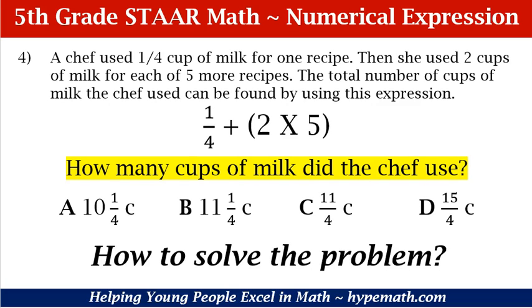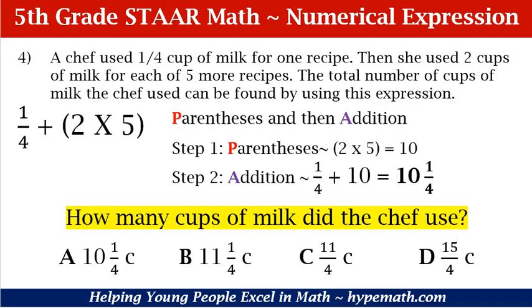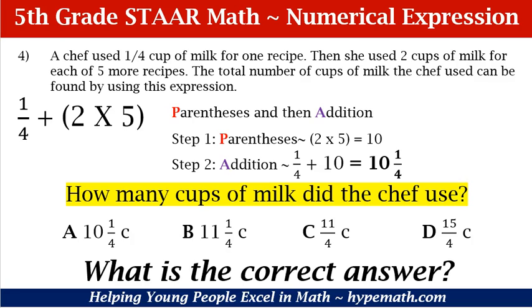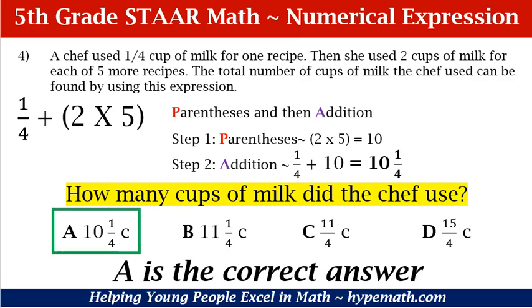For this problem or the expression above, we have parentheses and also we have addition. With please excuse my dear aunt Sally, we see that we need to calculate the parentheses first and then addition comes after that. How do we solve the problem? Like we said before, we first need to calculate our parentheses. In our parentheses we have 2 times 5. 2 times 5 is equal to 10. Step 2, we need to add. So it's 1/4 plus 10, and that is equal to 10 and 1/4. What is the correct answer? If you said A, you are absolutely correct. High five! Let's move on to problem number 5.